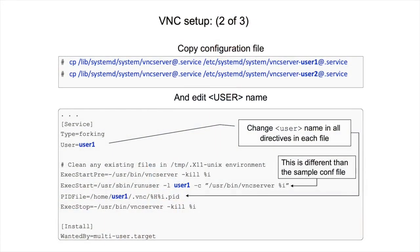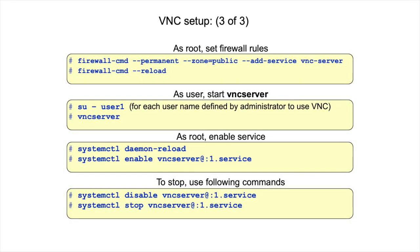Optionally, you can set the VNC server service to start at reboot, and that's a pretty good idea. The configuration file steps are reflected on the screen. Take time to review these commands and note that the exec start command is quite different from what you'll see in the sample configuration file. This is taken from RHEL 7, where the sample syntax actually fails — I've pointed out the syntax that works on the screen. The firewall and VNC server commands are also reflected on the screen.